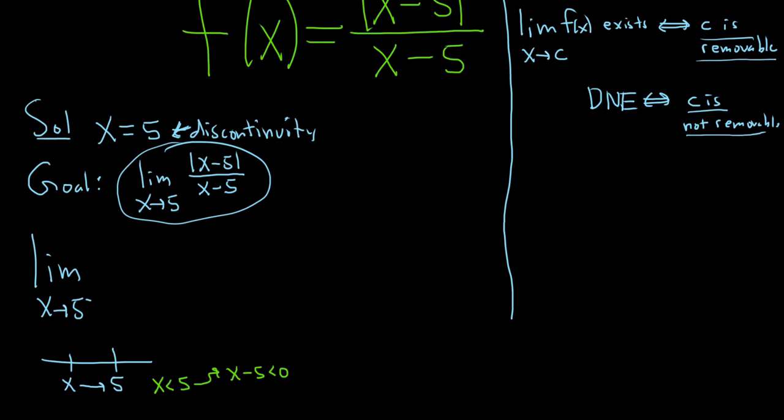And so recall, whenever you have something that's less than 0, if you take the absolute value of that, you drop the absolute value and you put a negative sign there. Super key. This is the definition of absolute value.